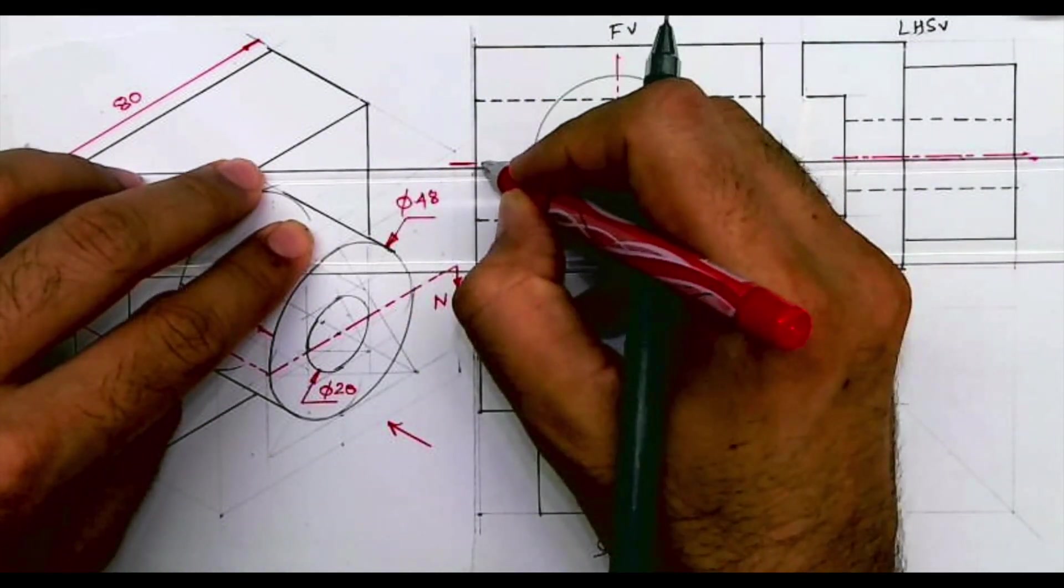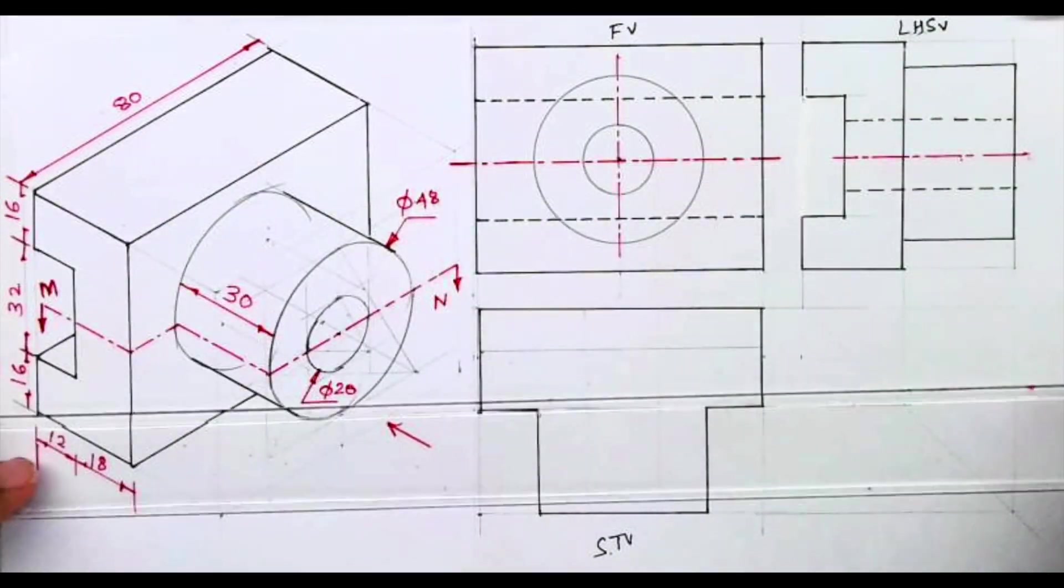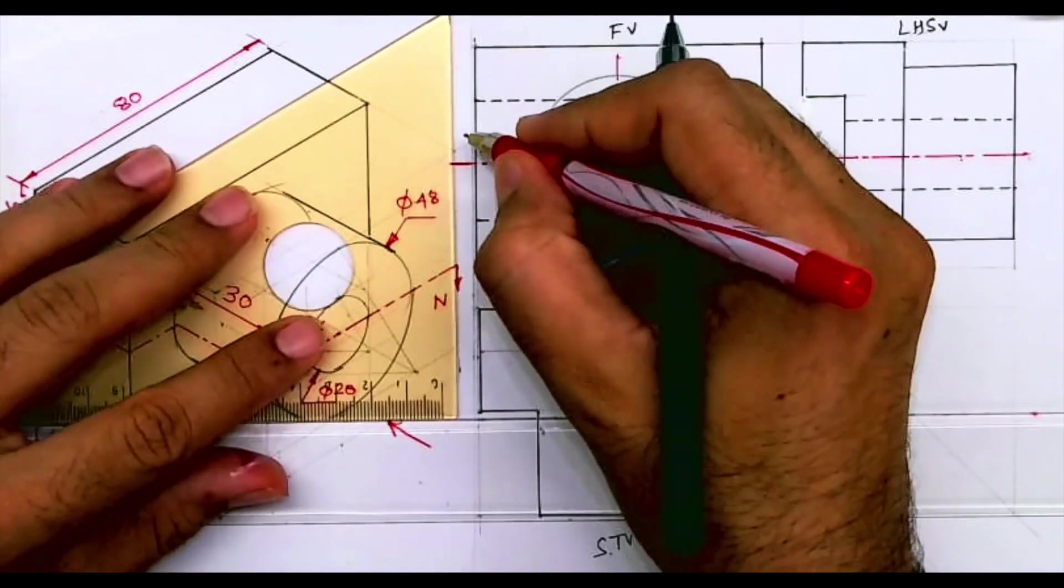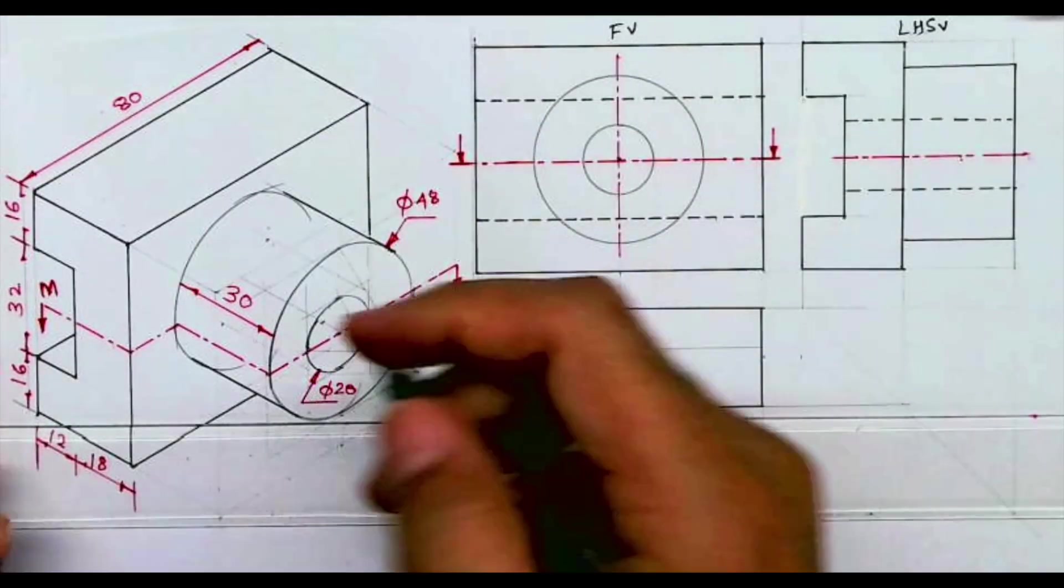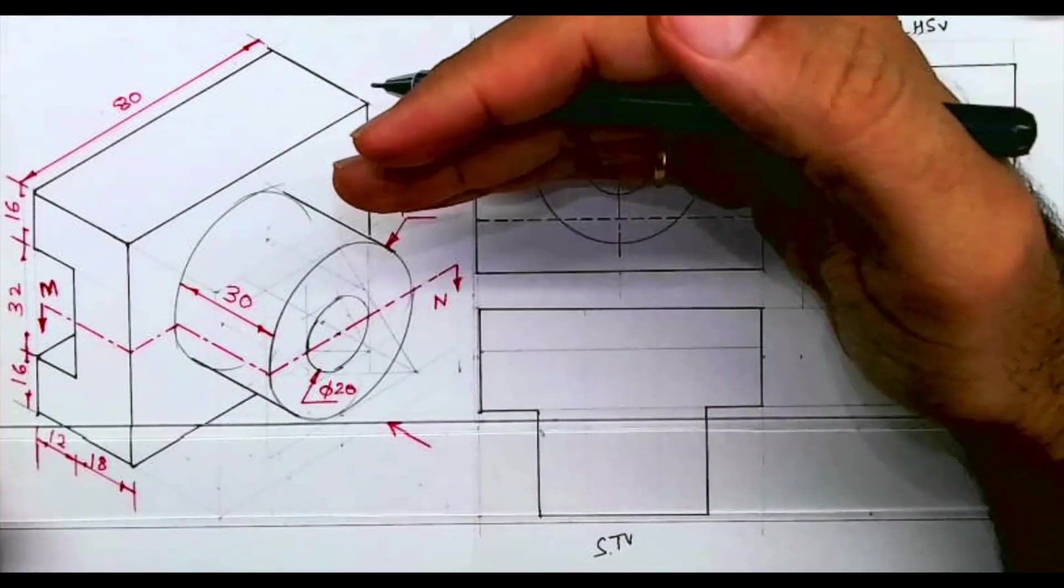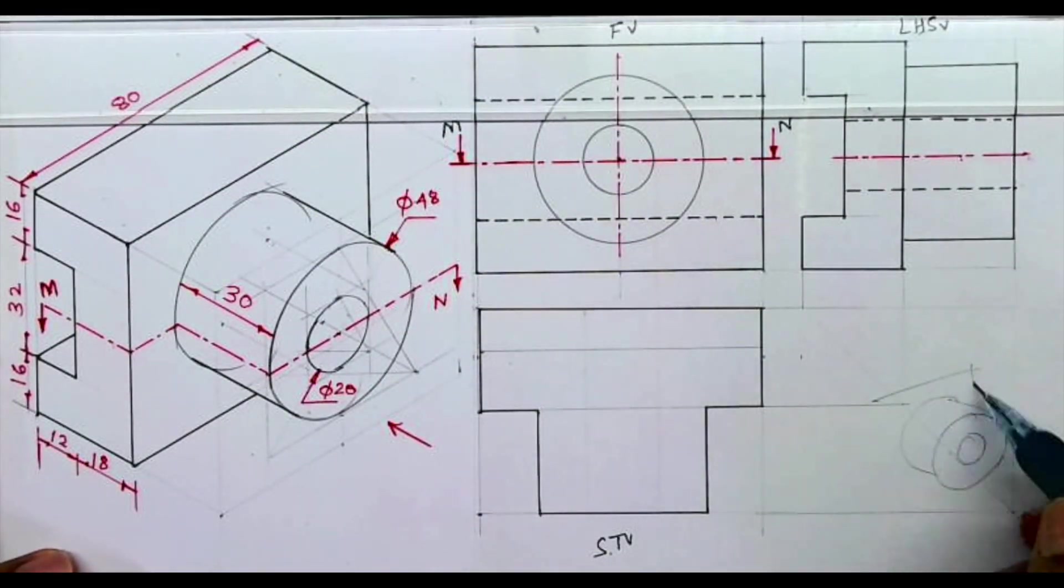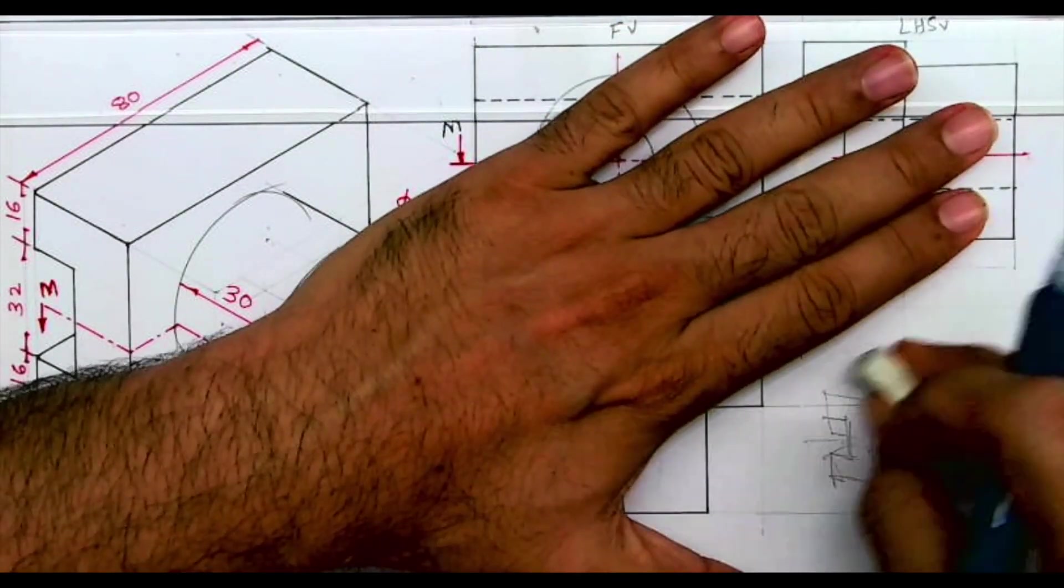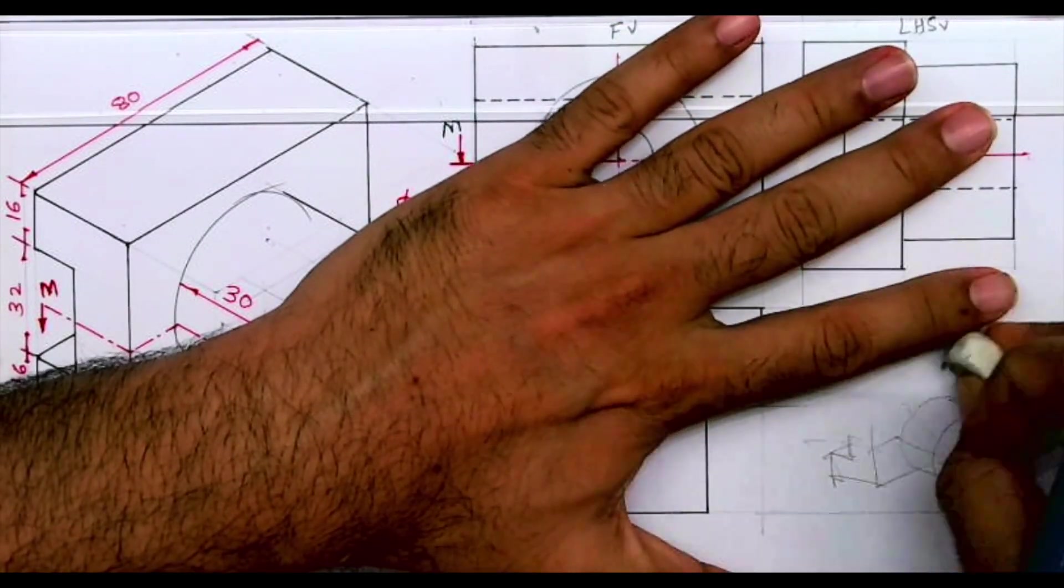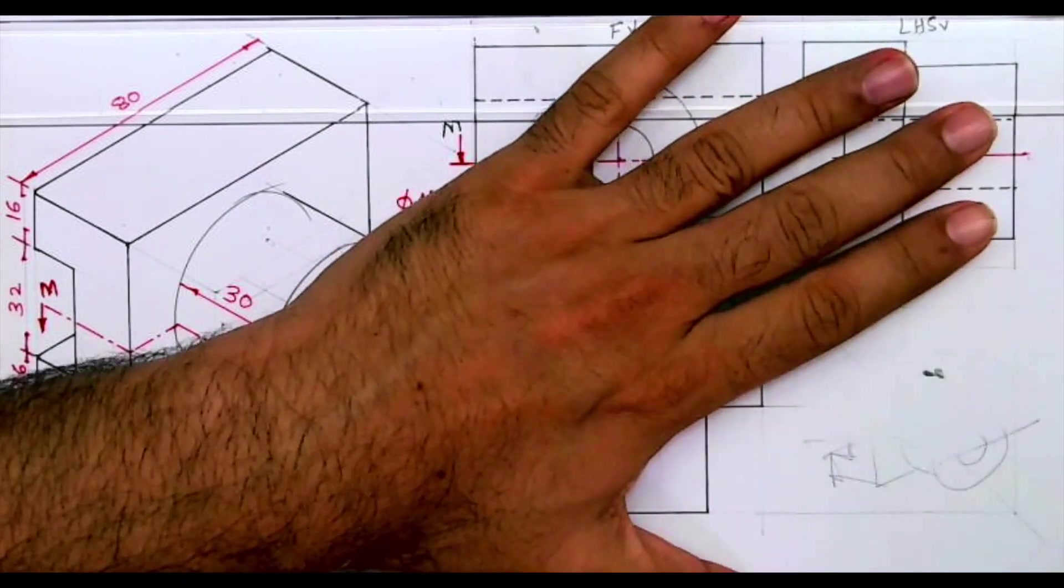So what I will do, I will first draw the cutting plane line which is passing through this midpoint. Will write M and N. This is M and this is N. It is cut like this, see this way. So the upper part will go away because we are drawing sectional top view, so observer will see from the top.